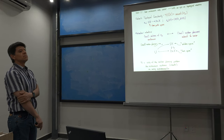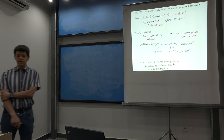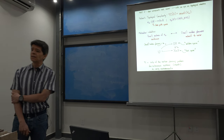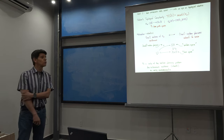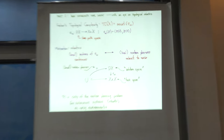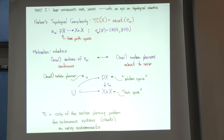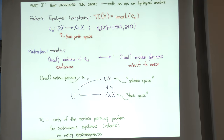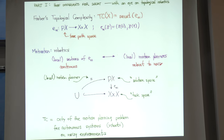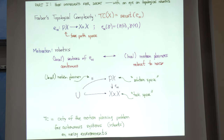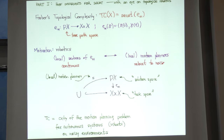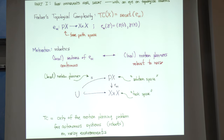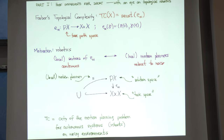The main topic is topological complexity, a concept introduced about 20 years ago by Michael Farber. It has to do with having a topological model for the motion planning problem in robotics. The idea is that you have a space X, which is the configuration space of some mechanical system, and you consider the double evaluation map that goes from the space of free paths on X down to X times X.